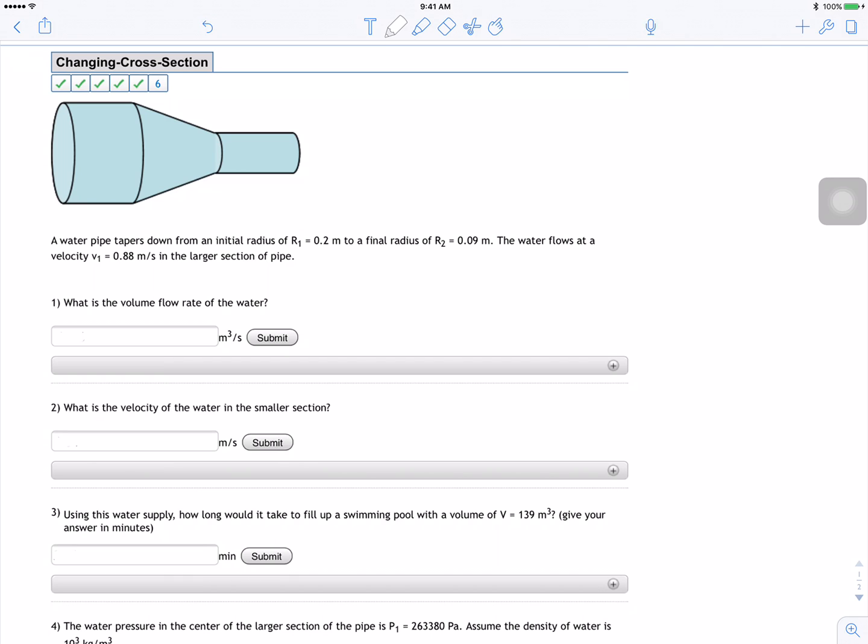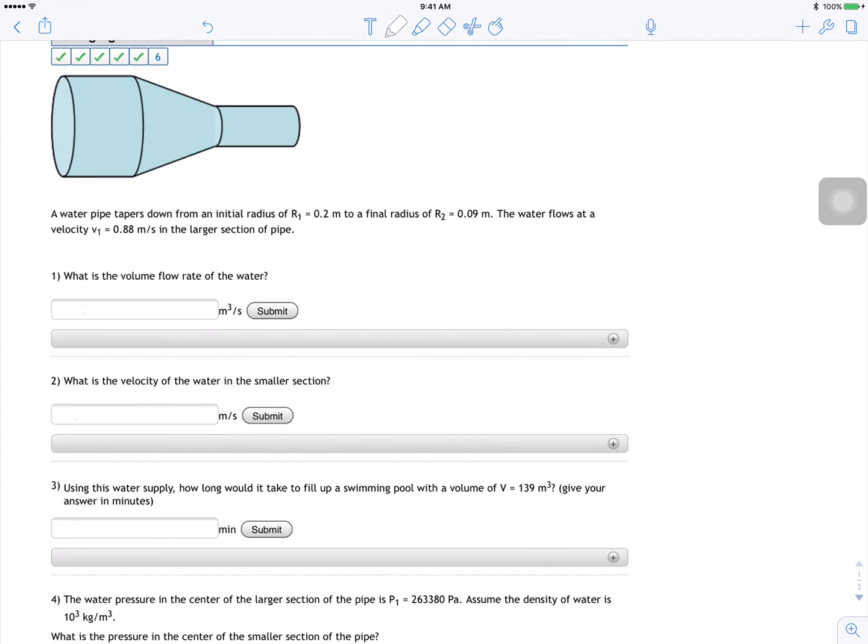What's up guys, this is Walid and today's problem is the changing cross-section. So we have a water pipe and it has different radius—it becomes smaller—so they're asking the first question.